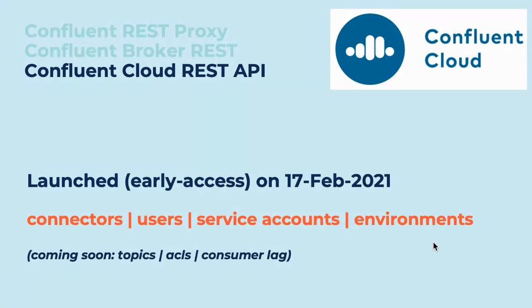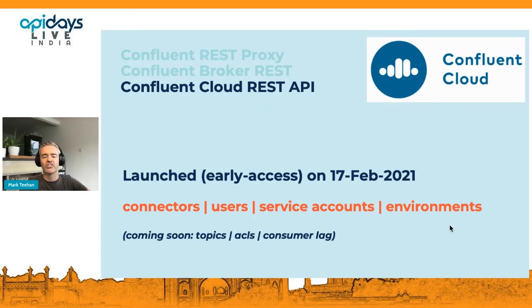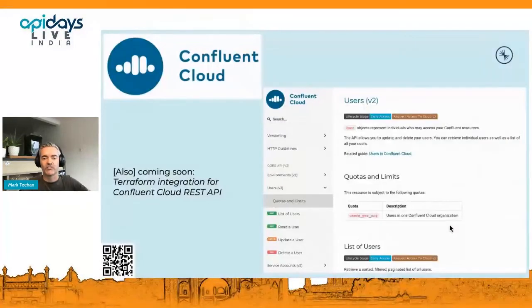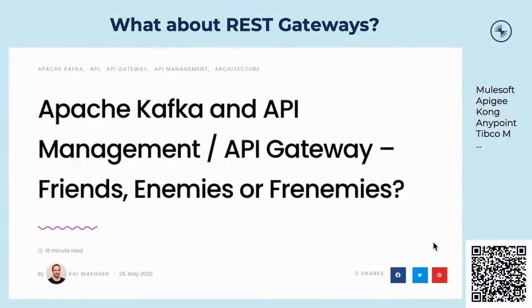You can manage connectors via REST APIs for automation of workflows, manage users and service accounts created for microservices, and manage environments like prod, test, and dev. We'll be adding REST calls soon for topics, managing ACLs, and monitoring consumer lag on Confluent Cloud. We have published the REST API for Confluent Cloud as a Swagger — you can jump onto the Confluent Cloud documentation and take a look through to see if it's useful for you.